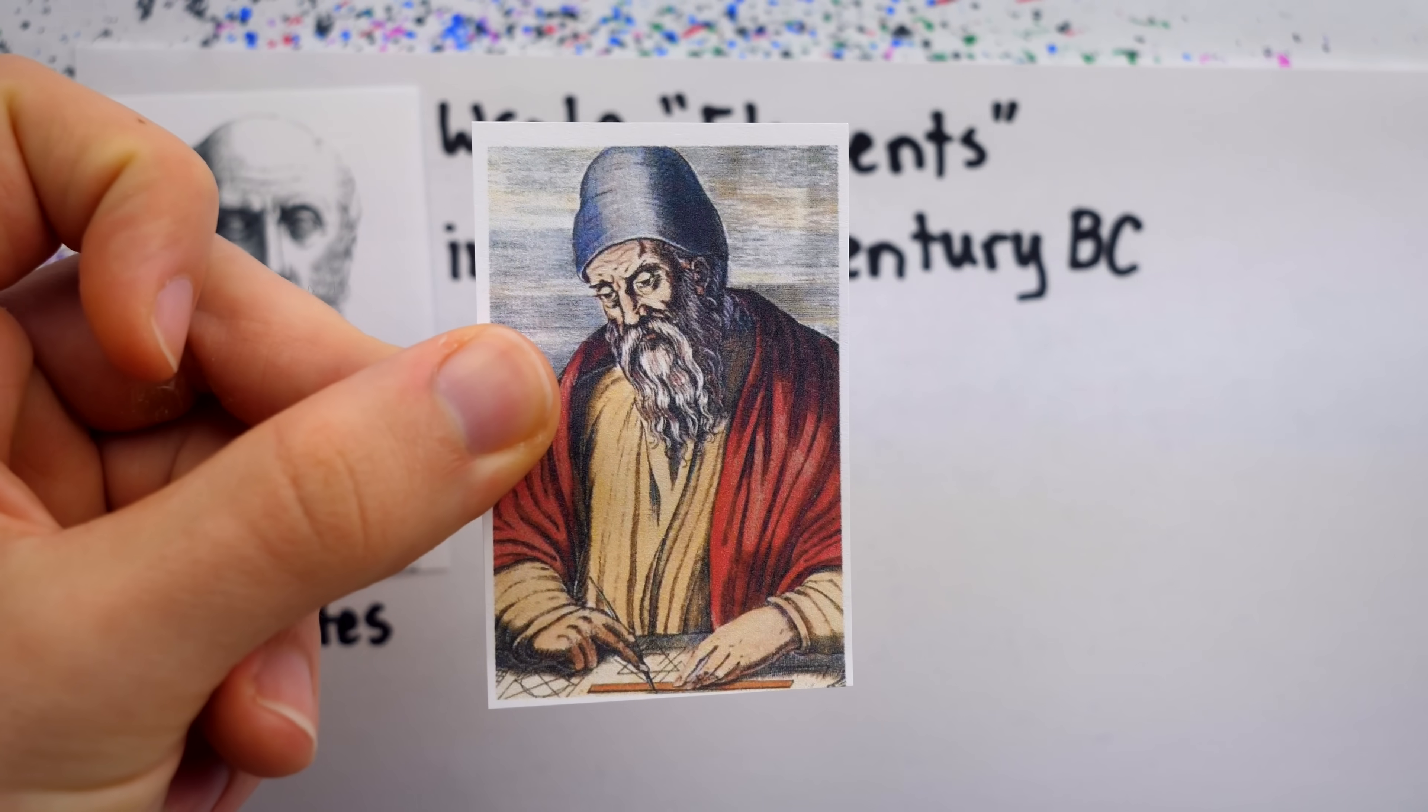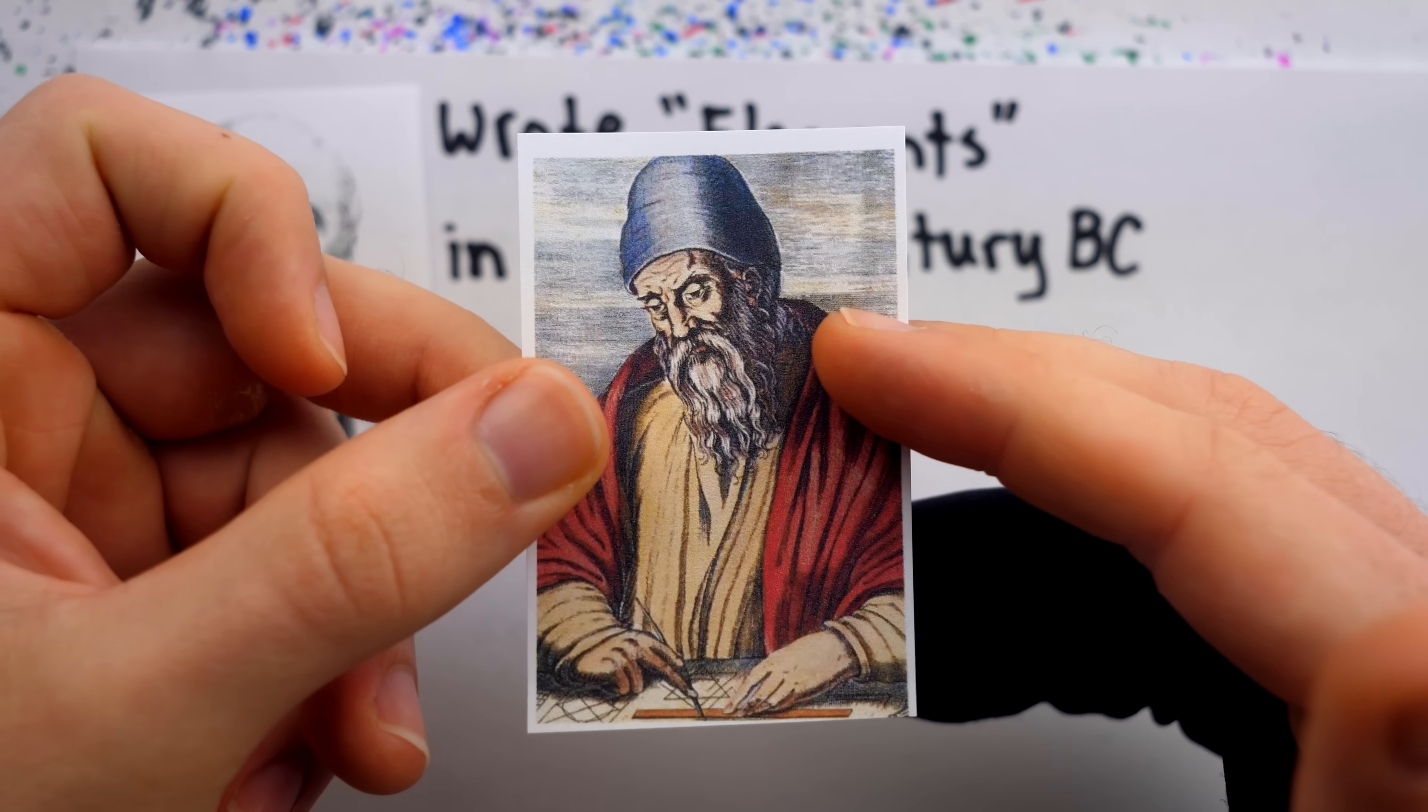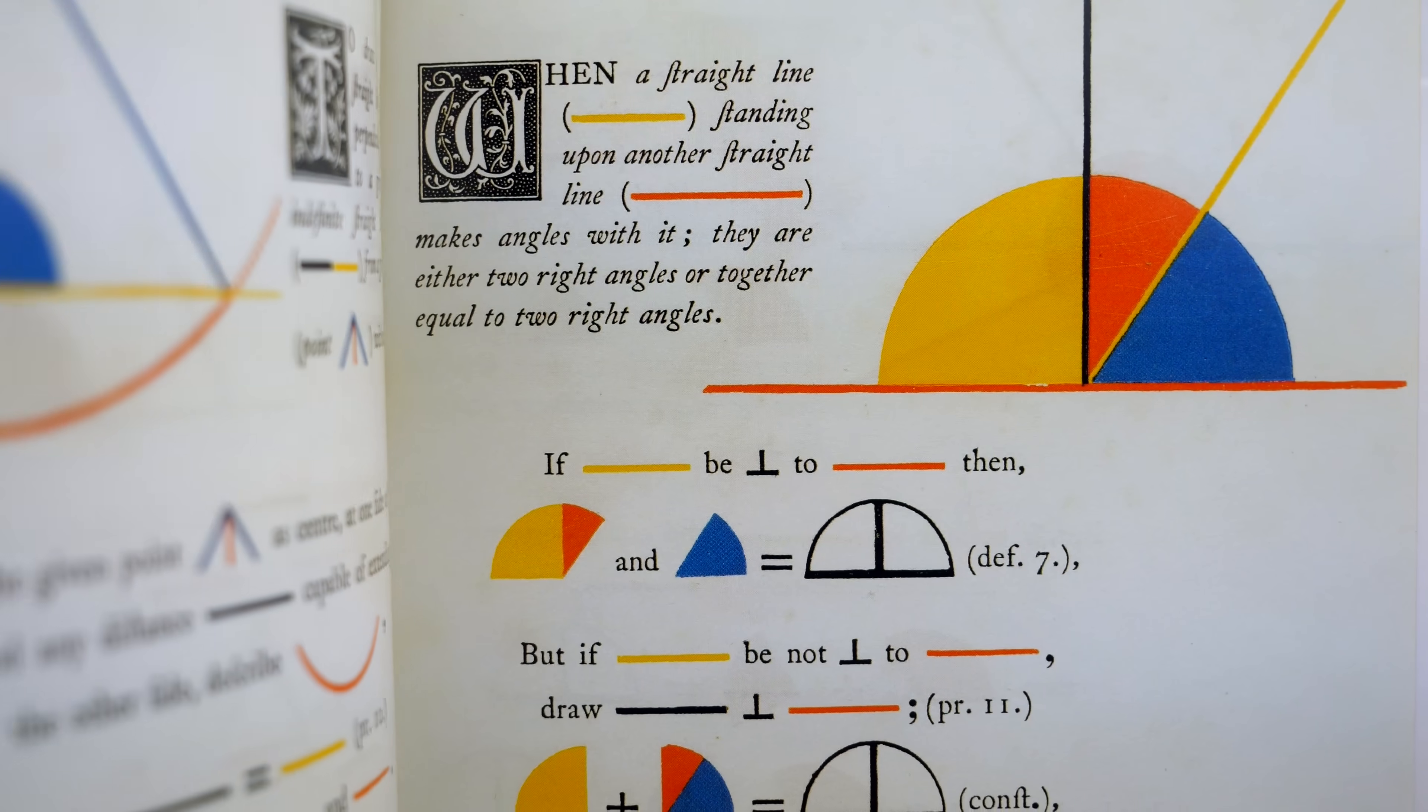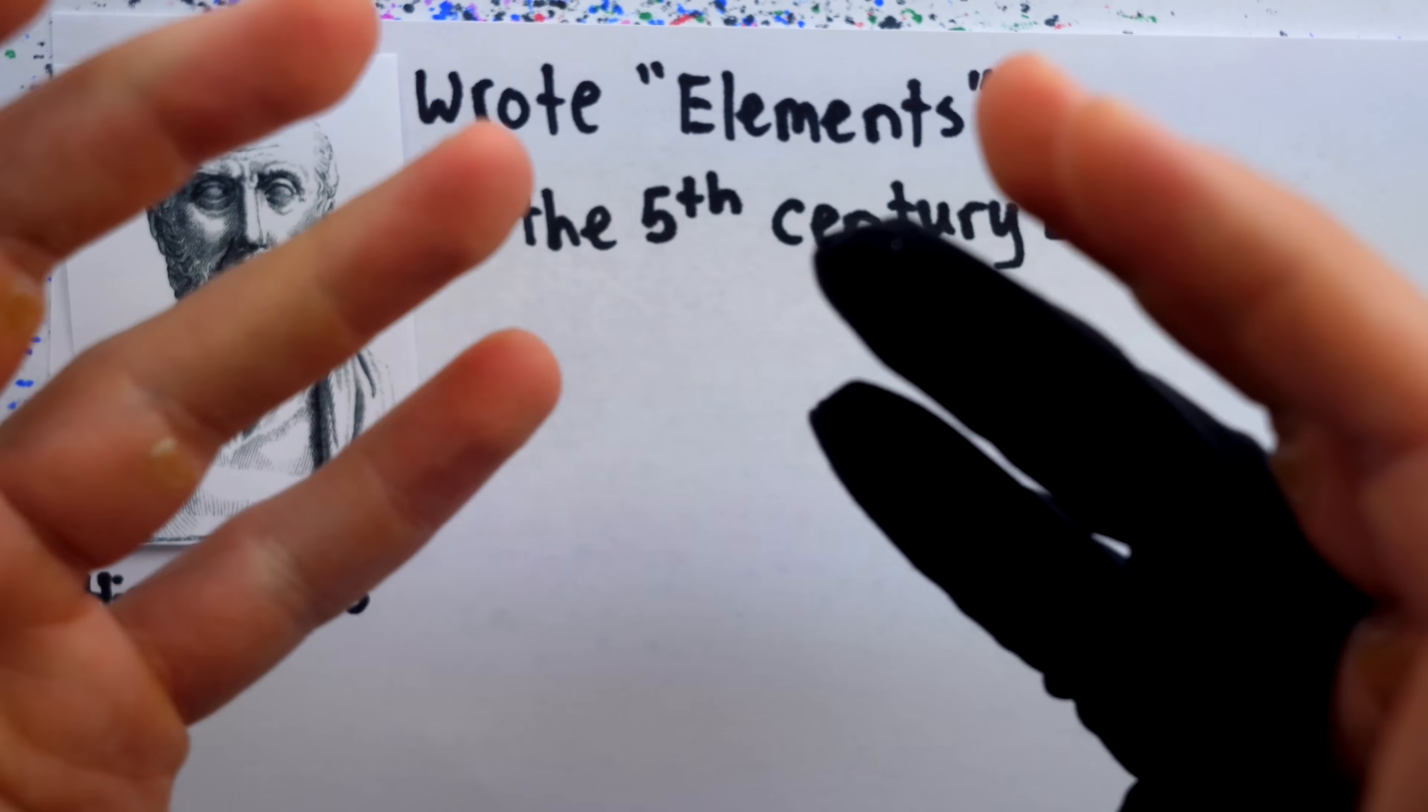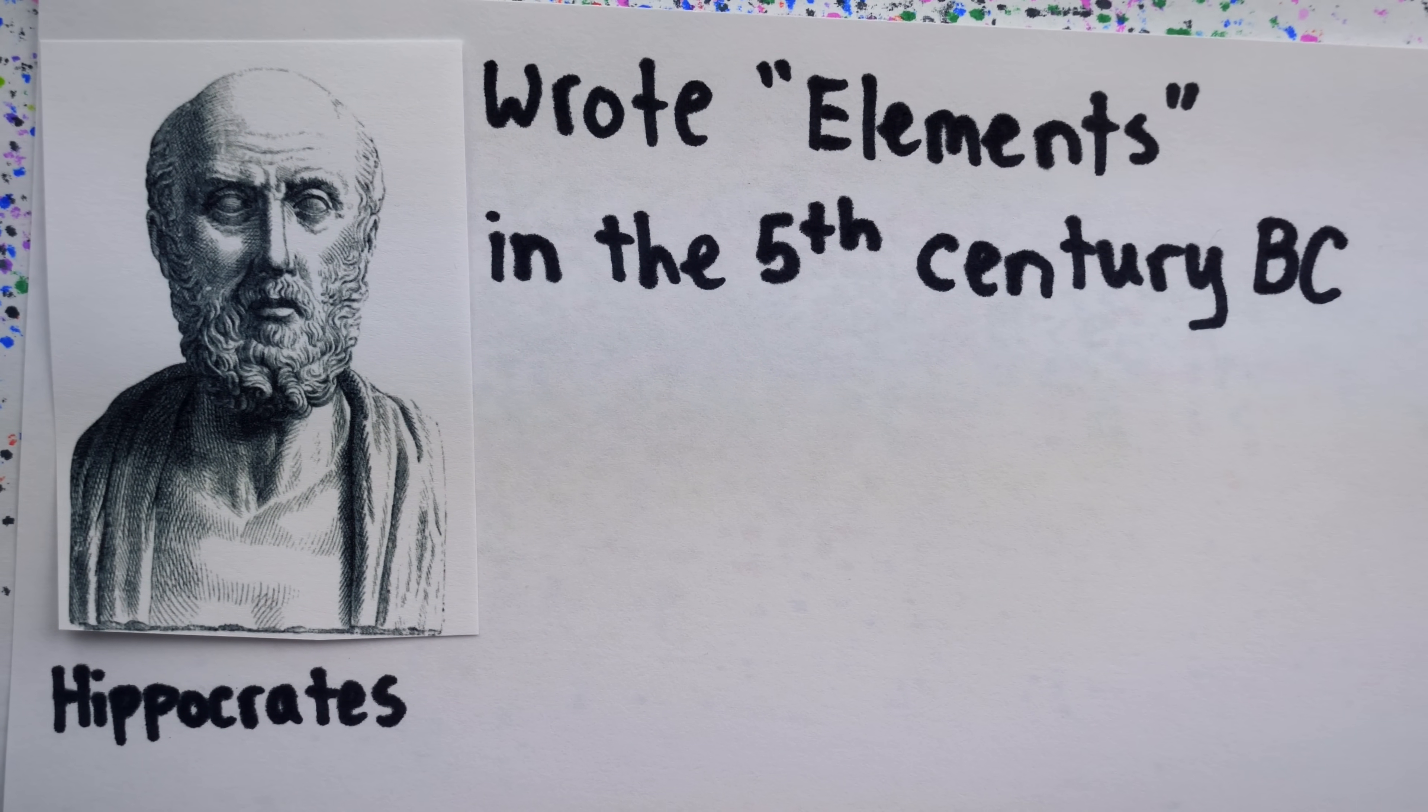Of course, Euclid's elements ended up surviving the test of time, being used and republished from 325 BC all the way until today. On the other hand, Hippocrates' elements is sadly lost to time, but there is a saving grace.